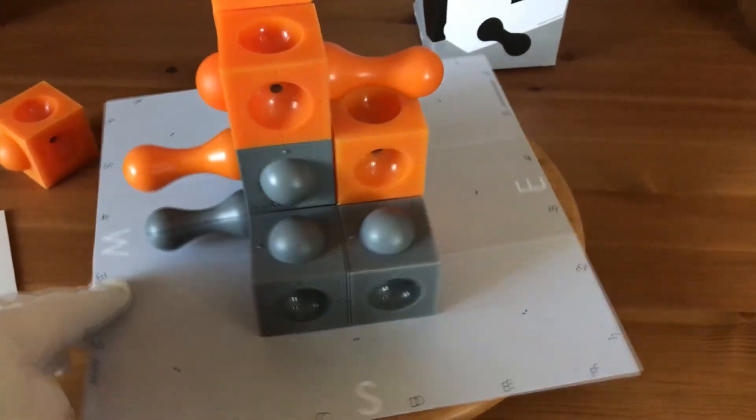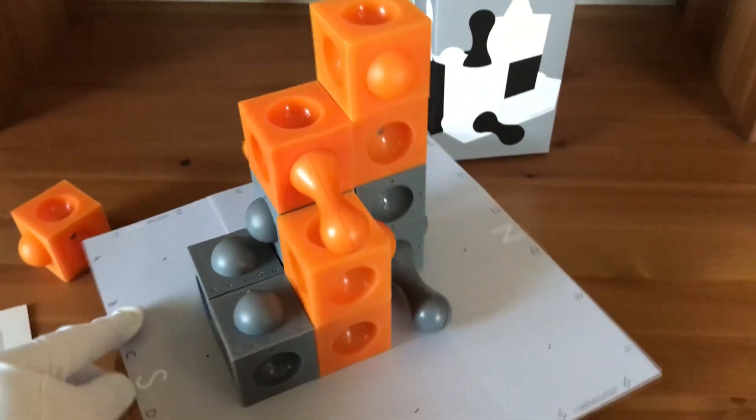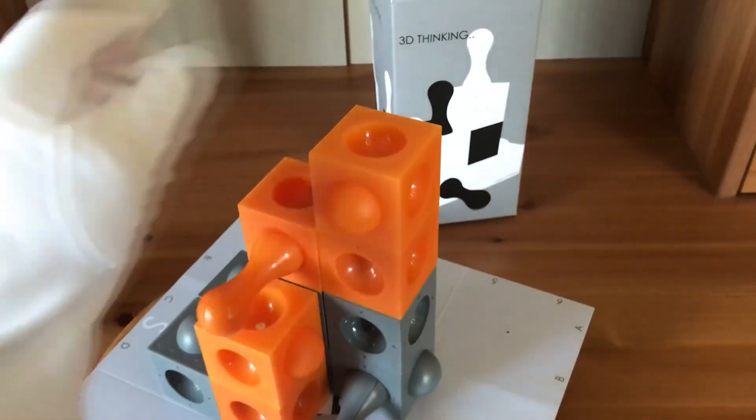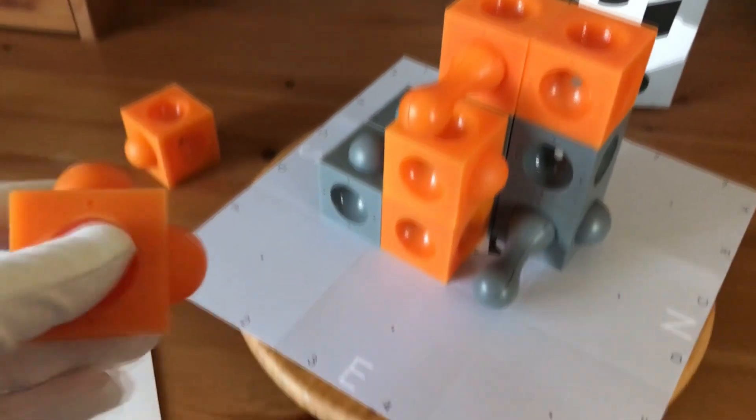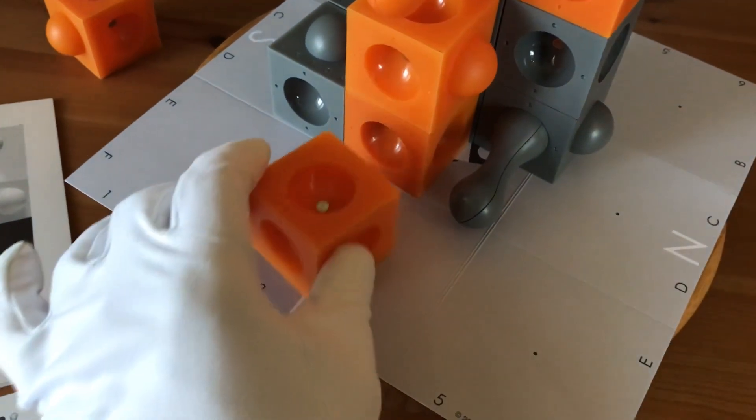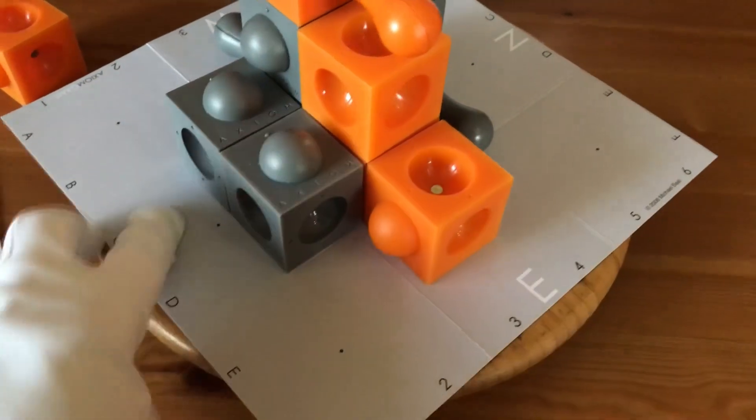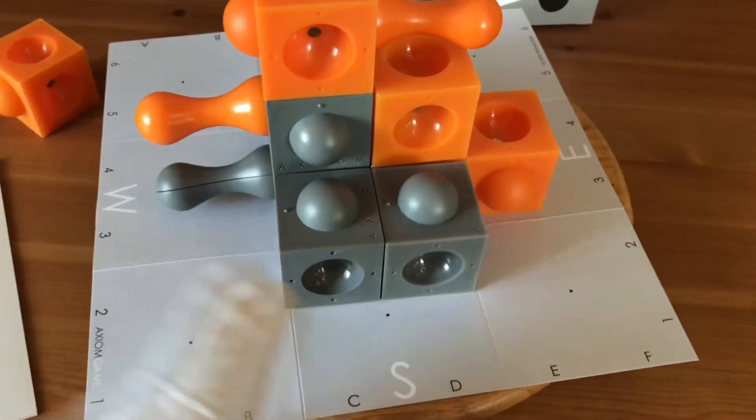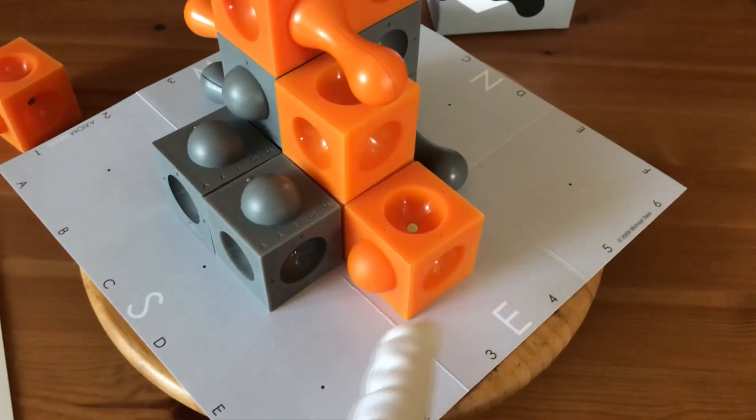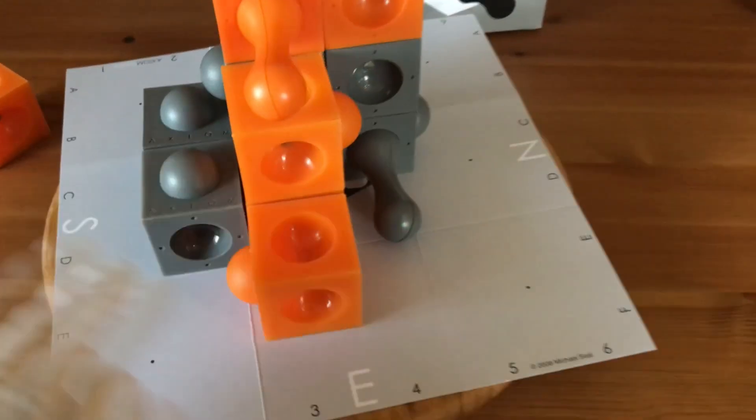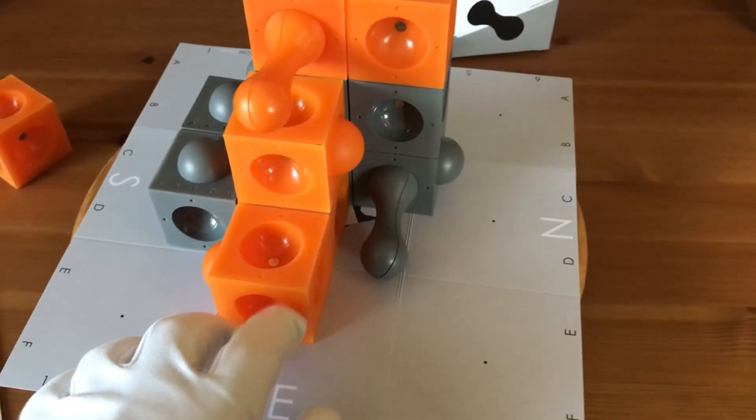Now orange responds to this by building an escape route, taking this cube and putting it here like this, which is also preventing the way for this scepter. Yeah, it's blocking the way for this scepter. It can't end up here. Which is inconvenient for grey.